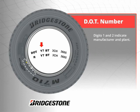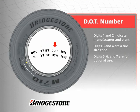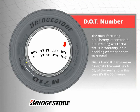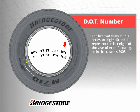Digits 1 and 2 indicate manufacturer and plant. Digits 3 and 4 are a tire size code. Digits 5, 6, and 7 are for optional use. The last group is manufacturing dates. The manufacturing date can be very important in determining whether a tire is in warranty, or in deciding whether or not to retread. Digits 8 and 9 in this series designate the week, 1 through 53, of the year — in this case, the 36th week. Digits 10 and 11 represent the last digits of the year of manufacturing, so in this case, 2005.